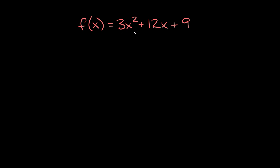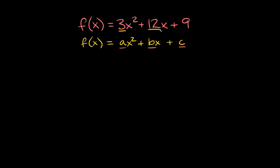To make sure we understand the parts of this function, let's write the standard form of a quadratic equation. That's f of x is equal to ax squared plus bx plus c, where a, b, and c are just coefficients. So here you can see that a, b, and c would be those three coefficients — that's the first part, just labeling your three coefficients.